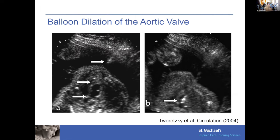Here is a picture showing the catheter going into the uterus. We see the tip of the left ventricle and here is the aortic valve. In the other image, you can see the catheter has entered the tip of the left ventricle and is about to cross the aortic valve.